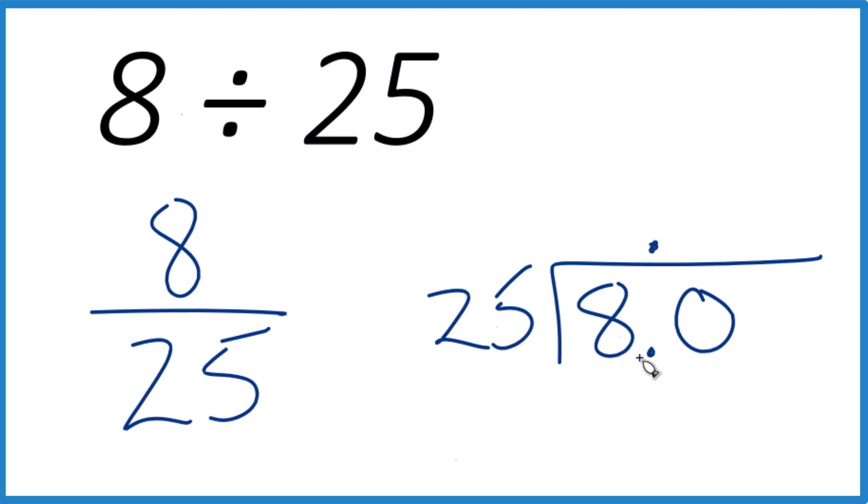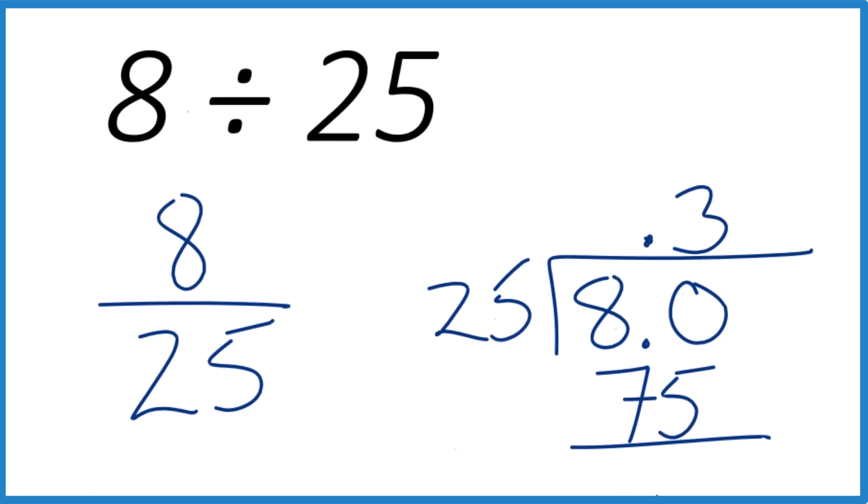Now 2 times 25 is 50. 3 times 25 is 75. So I could subtract and I get 5.